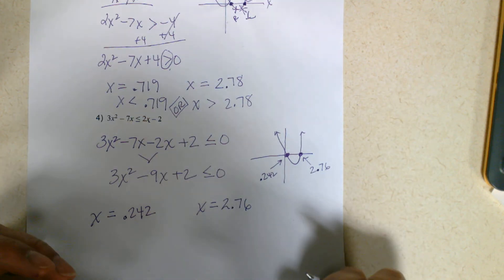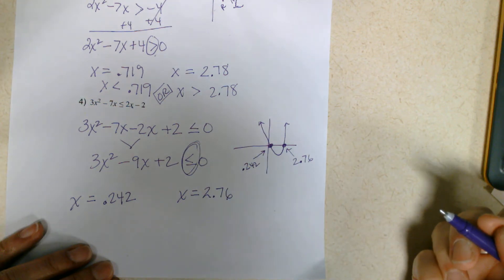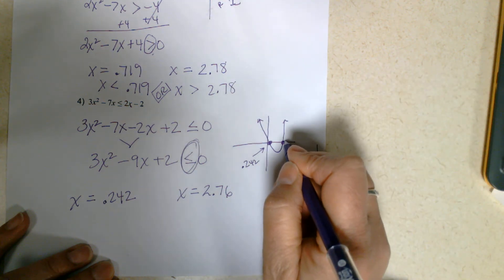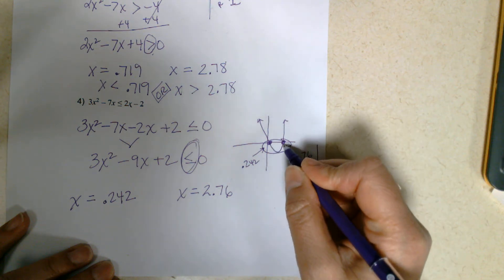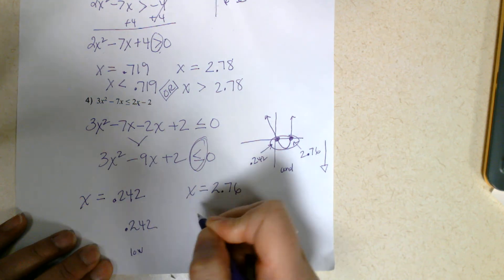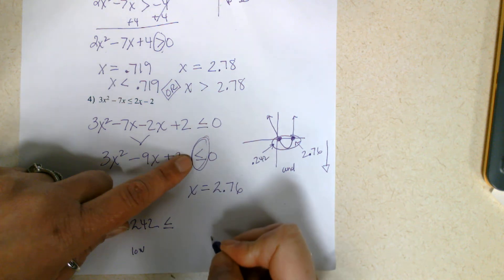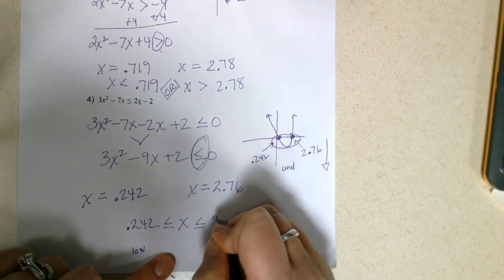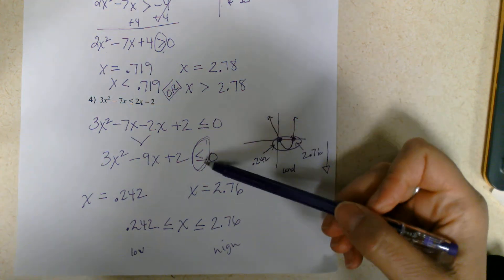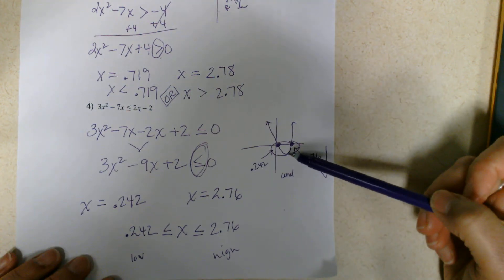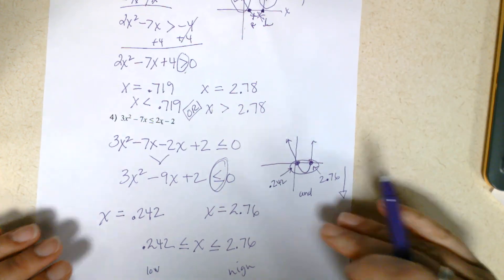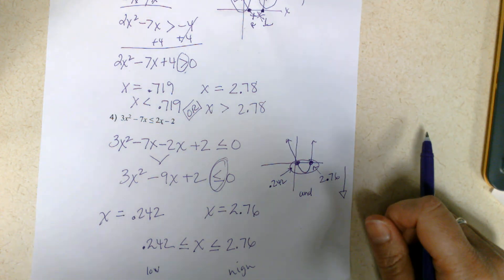I'll sketch this out. Here's my first x-intercept at 0.242, and here's my second at 2.76. Let's figure out how to write this. We go back — y is less than or equal to, so we have to look lower. Down is less than, so that means it's going to be between the intercepts — an and problem. We put the lower number first, then less than or equal to x, which is less than or equal to 2.76. You really have to go back to the inequality symbol to see if it's an and problem or an or problem. This has been solving quadratic inequalities. Hope it helped.